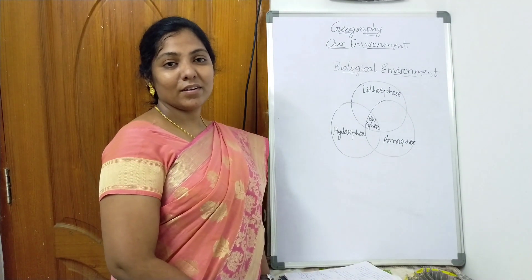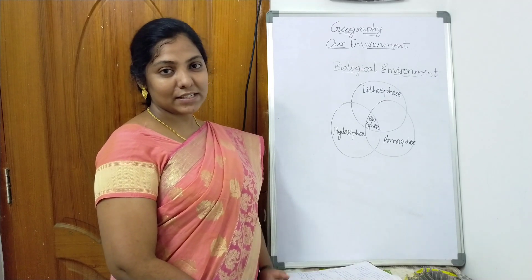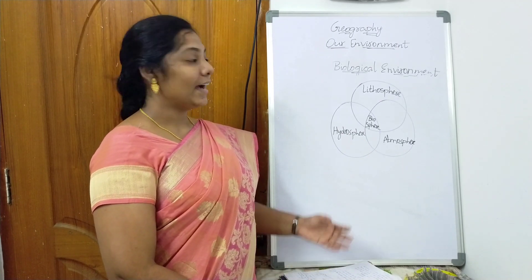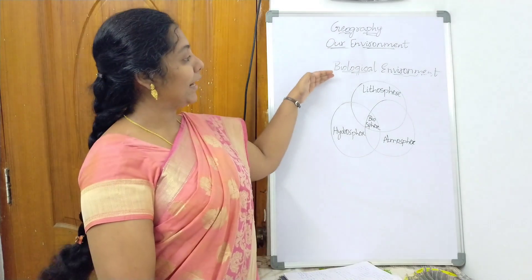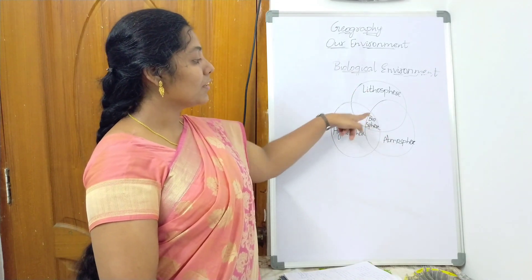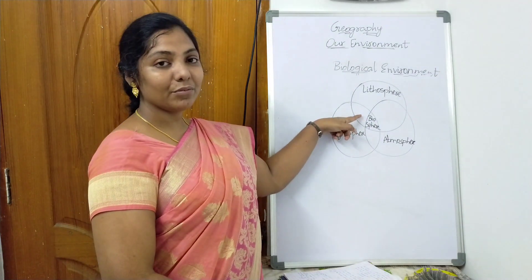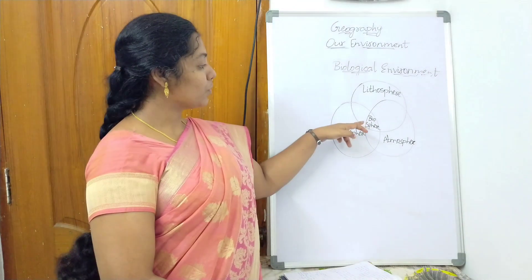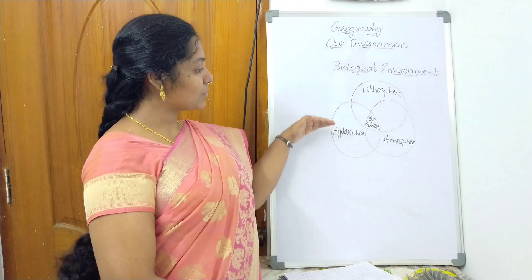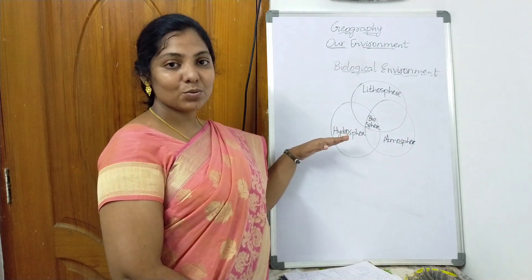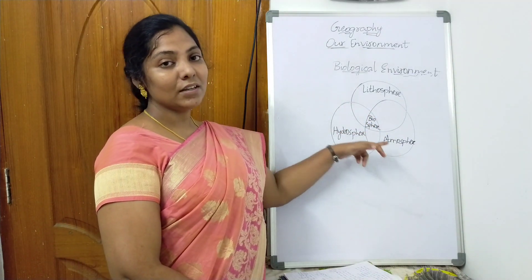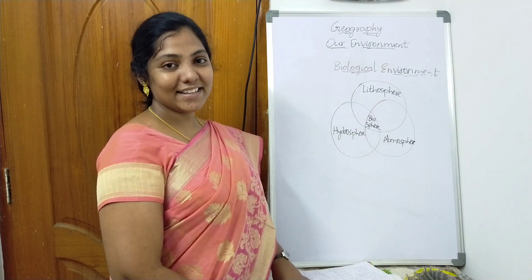So till now we have seen about the natural environment — what is physical environment and what are the components in the physical environment, that is lithosphere, hydrosphere, and atmosphere. And in natural environment, again, we are going to deal with biological environment. The biological environment is nothing but where lithosphere, hydrosphere, and atmosphere meet together to form biosphere. In this biosphere, life exists. The interaction of the biosphere with the physical components like lithosphere, hydrosphere, and atmosphere leads to a system called ecosystem. Let us see that in the next session.